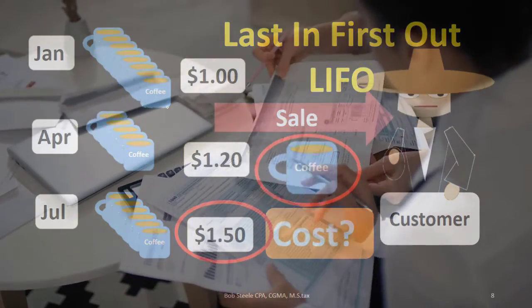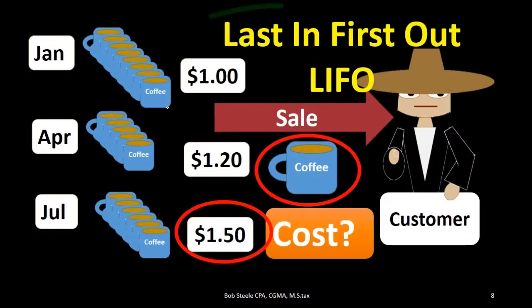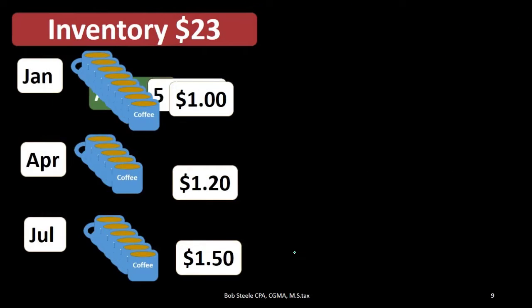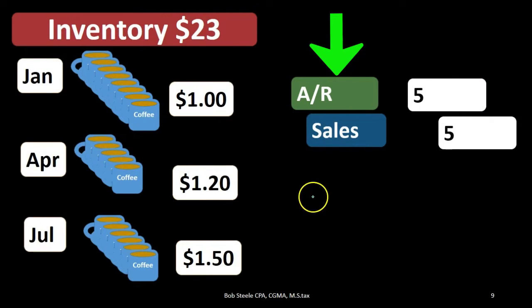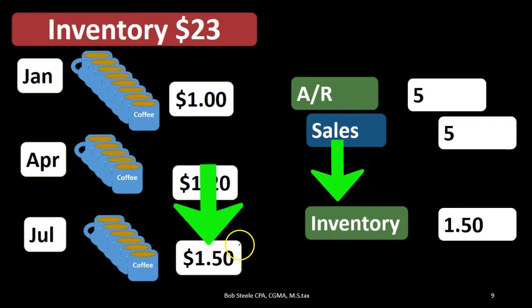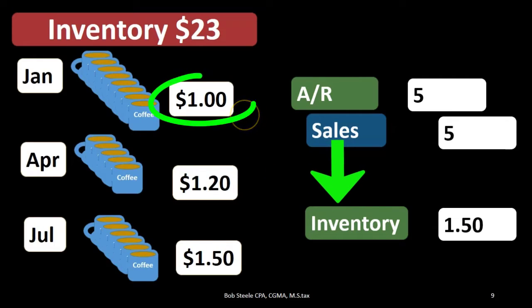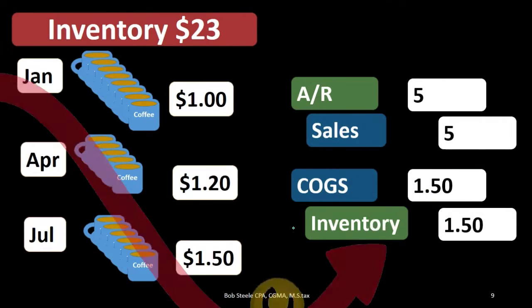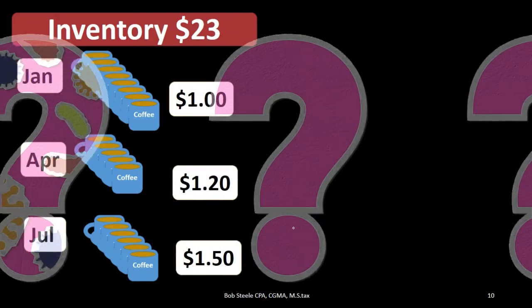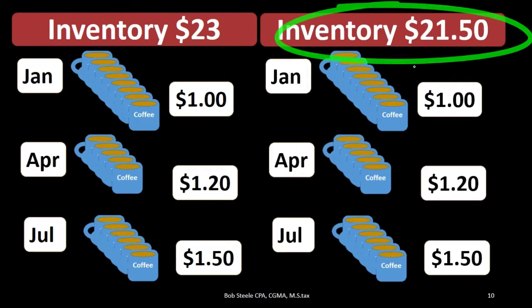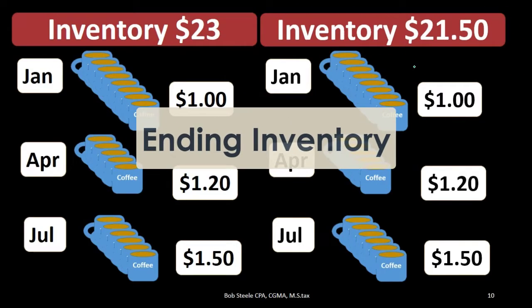It's a good example of how a difference in method can result in differences on the financial statements and net income. Under LIFO, we have the same five-dollar sale — the sales price isn't affected by the method — but inventory goes down by $1.50 instead of $1.00, and cost of goods sold is $1.50. The expense is higher, making net income lower. Starting from $23, our ending inventory is now $21.50.